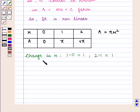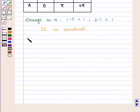But change in A, that is π - 0 = π, and 4π - π = 3π, and we see that it is not constant.